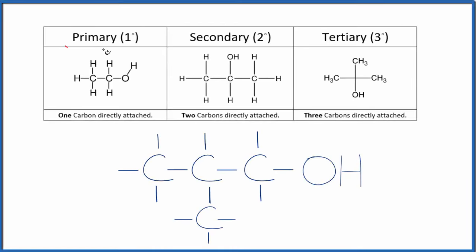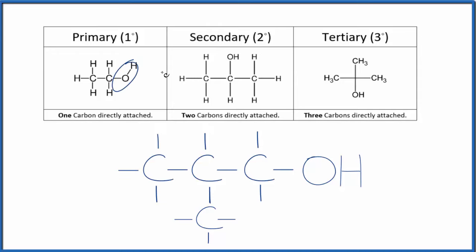Let's look at how to identify primary, secondary, and tertiary alcohols, and then get some practice to make sure you can do that really well. An alcohol will have that OH group bonded to a carbon, and we can define where that alcohol is in the carbon chain as primary, secondary, or tertiary.